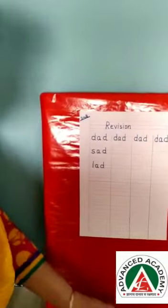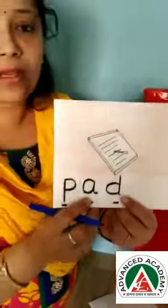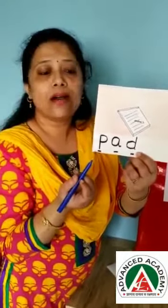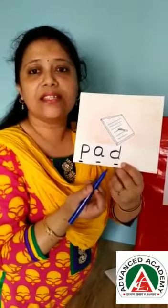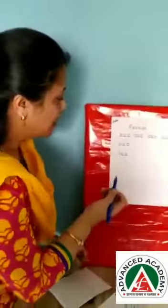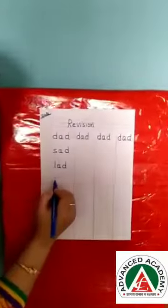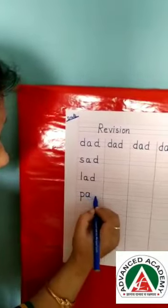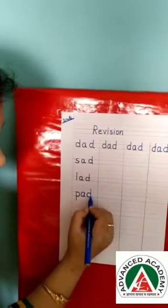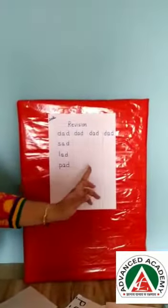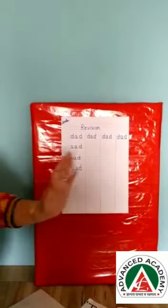Next word is P, A, D — Pad. So write. P, A, D — Pad. You have to write three times. All the words you have to write three times.